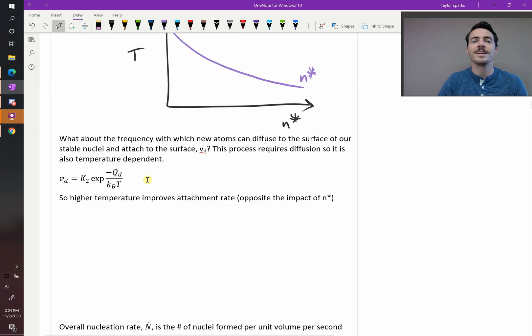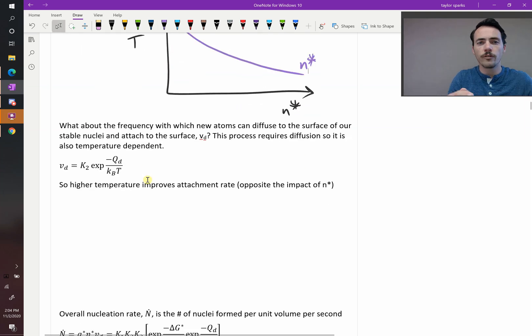Now, the next thing we need to think about is the attachment frequency. With what frequency do new atoms diffuse to the surface of your material, of this nuclei that's stable, and attach to its surface? So that V sub D, the frequency of attachment, V sub D, well, it's also going to look like an Arrhenius equation. It requires diffusion, though. So that's what's going to be the activation energy. Negative Q sub D is our activation energy for diffusion.